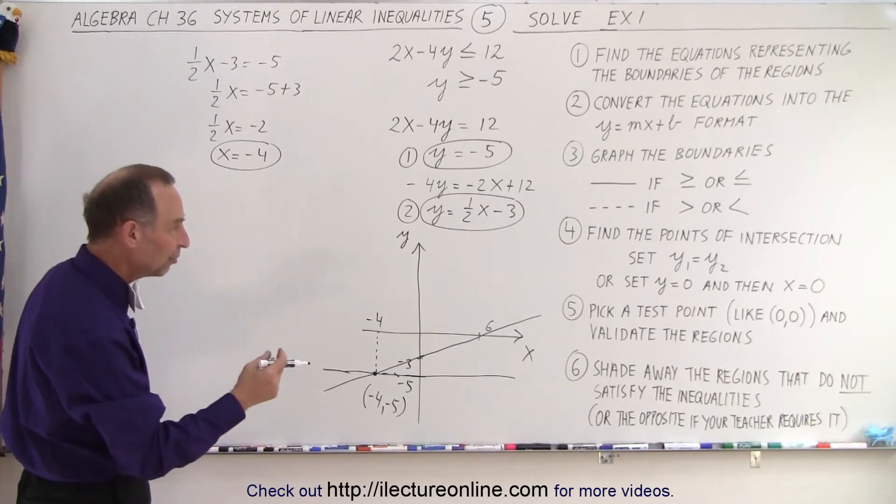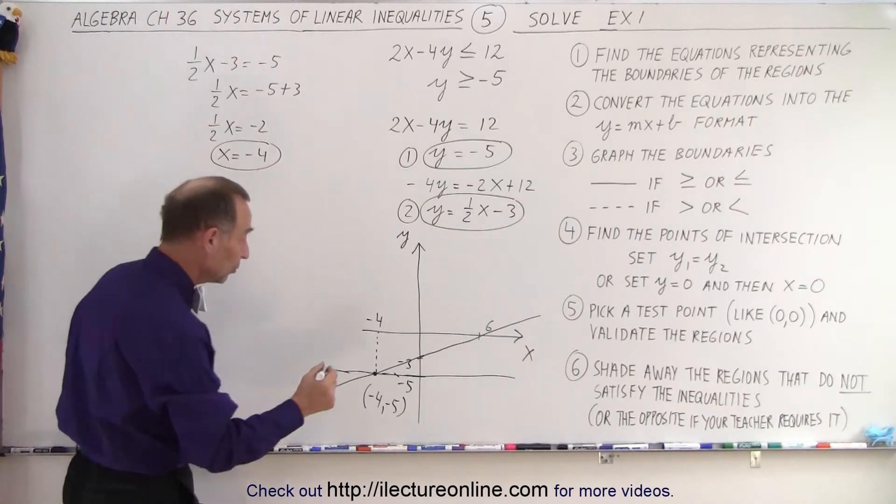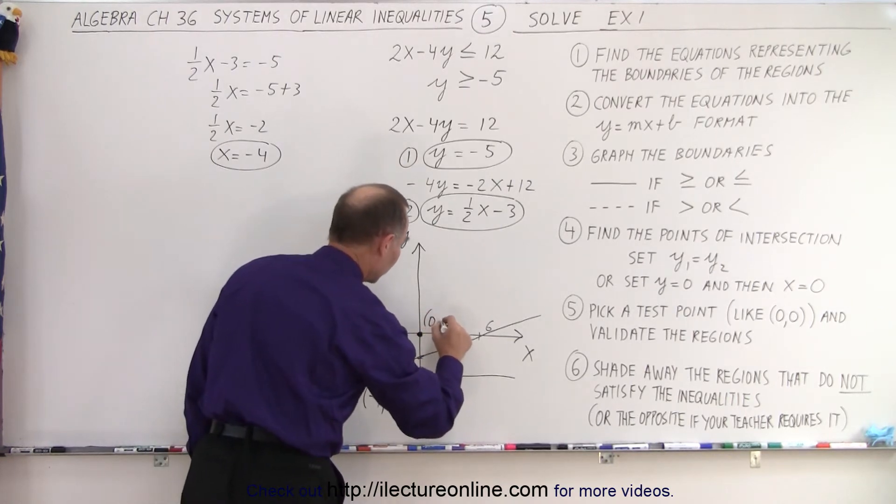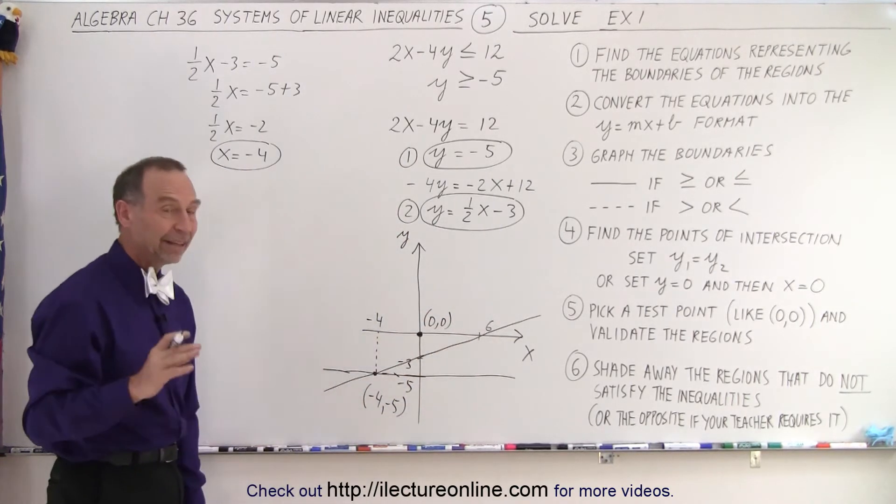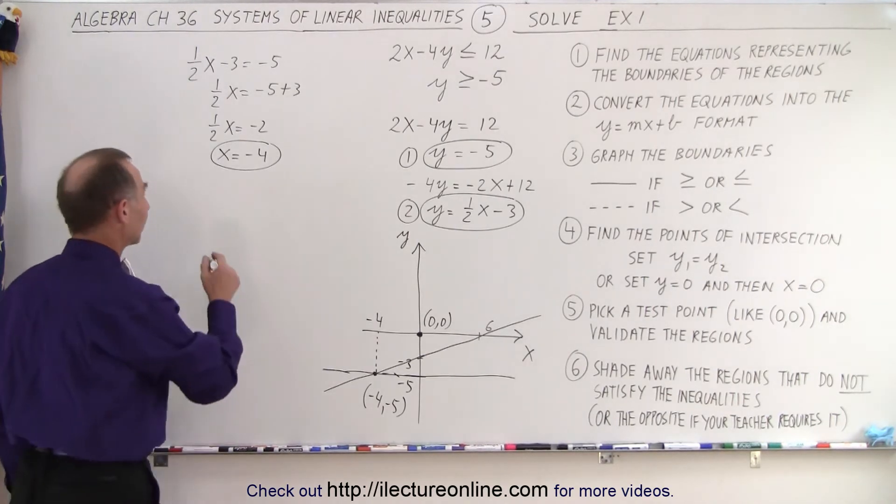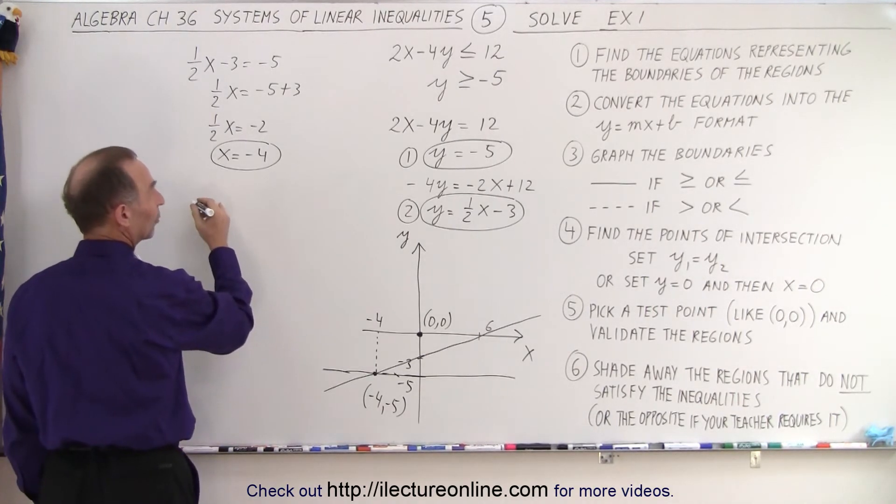Next, we want to pick a test point like 0, 0. We can do that because neither one of the two lines goes to that point. So we use the test point 0, 0 to find out if that test point lies within the valid region for each of the inequalities. So we're going to test the two equations.